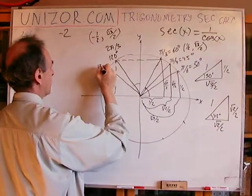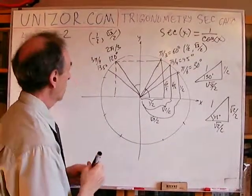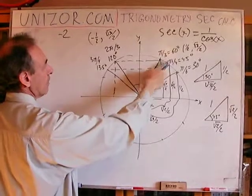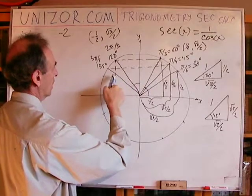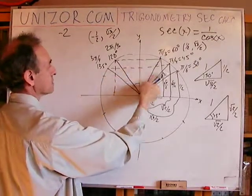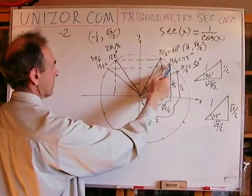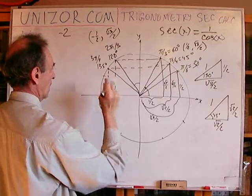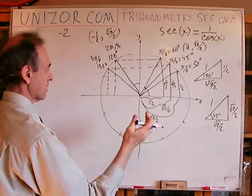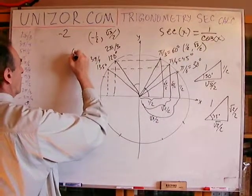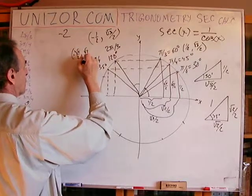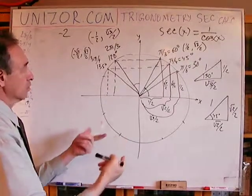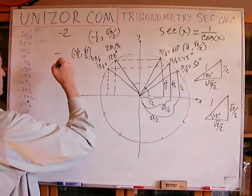Next, 135 degrees, which is 3π/4. Exactly similar consideration: 135 = 90 + 45, and 90 − 45 = 45°, so these angles are symmetrical relative to the y-axis. The ordinate stays the same, and the abscissa is opposite in sign but equal in absolute value. So the coordinates are (−√2/2, √2/2), which means cosine = −√2/2, and secant = 1 over (−√2/2) = −√2.